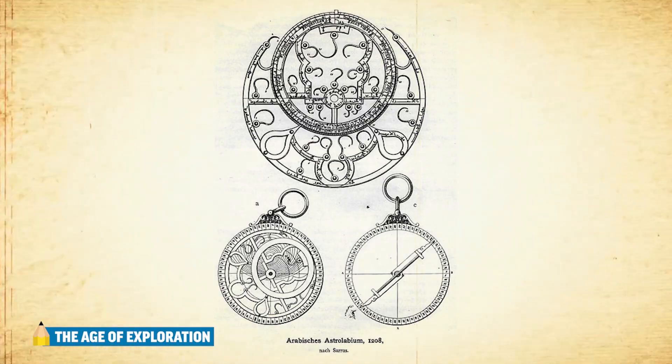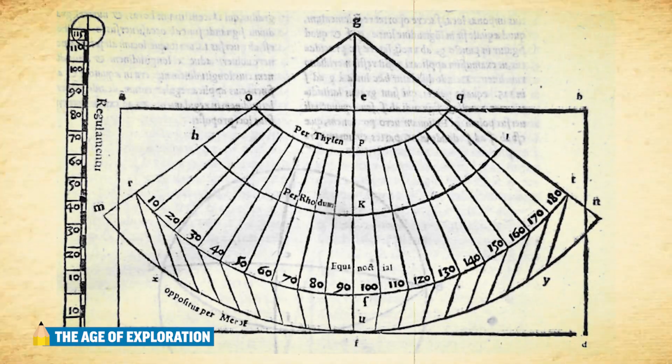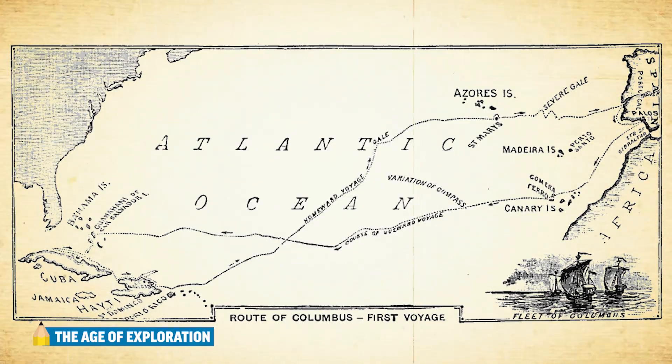Columbus was from Genoa, but moved to Lisbon to study navigation and learn about new navigational tools like the astrolabe, the compass, and the quadrant. Then he convinces the king and queen of Spain that he can find a direct route to the Indian Ocean trade and all of its prosperous wealth. And where does he end up two months later? The Caribbean.